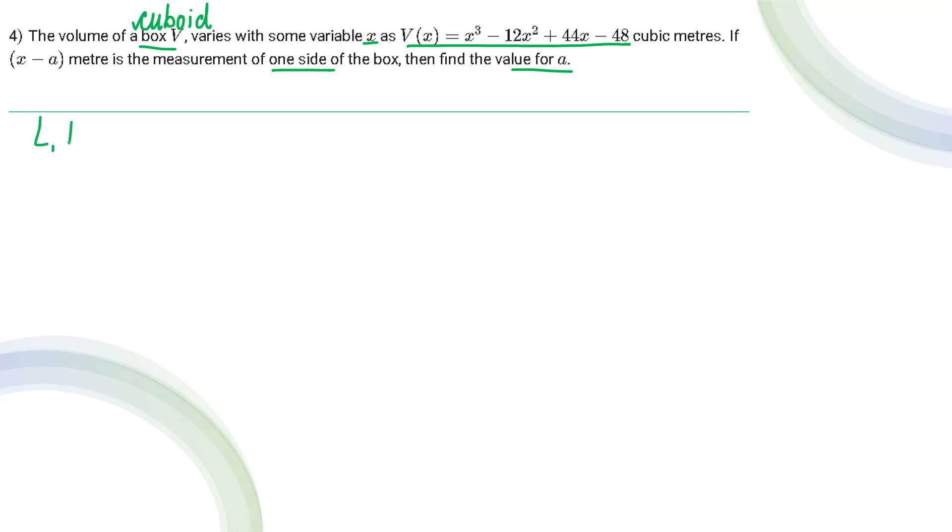And a cuboid has three dimensions: one is length, second is breadth, and then height. The volume is written as the multiplication of these three: l into b into h. But if I write these dimensions in terms of the variable x, I can write that volume in terms of x is x minus a, x minus b, and x minus c.